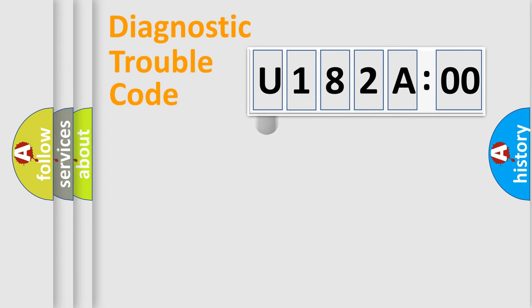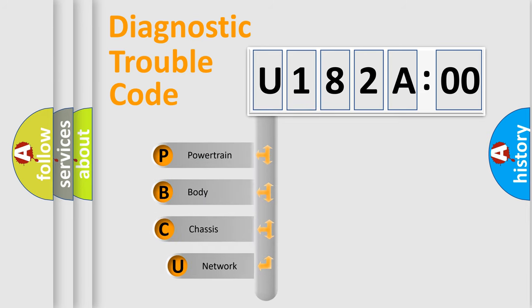First, let's look at the history of diagnostic fault code composition according to the OBD2 protocol, which is unified for all automakers since 2000. We divide the electric system of automobile into four basic units.